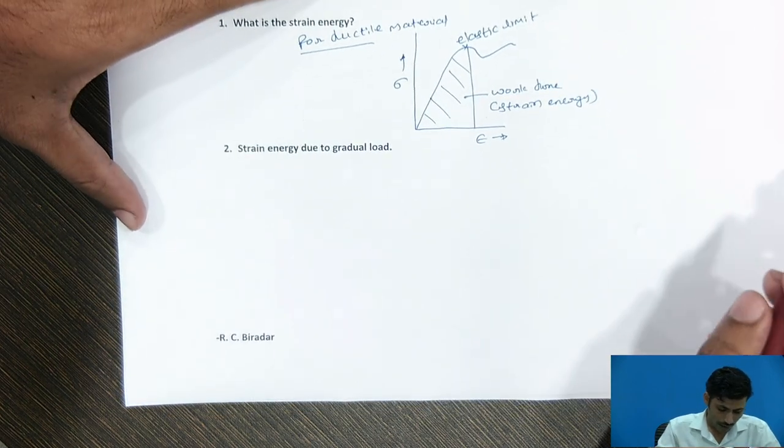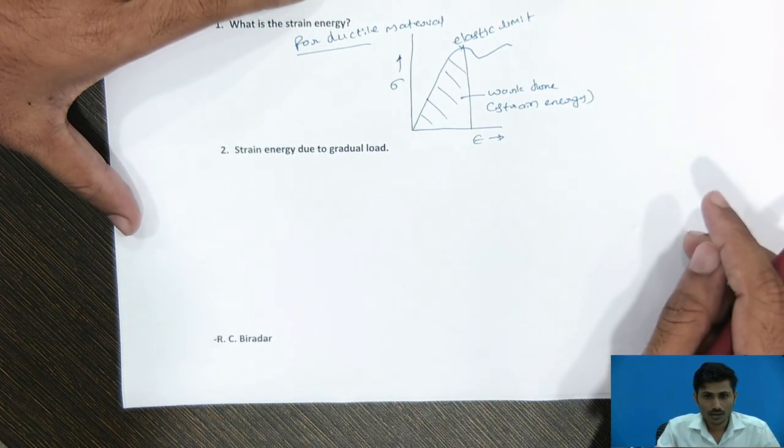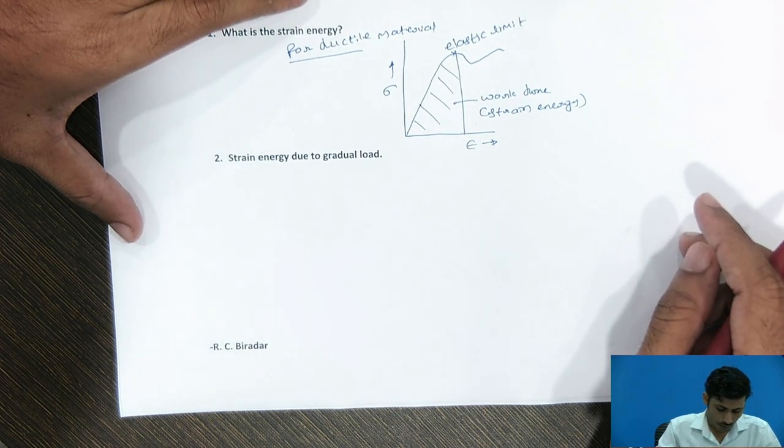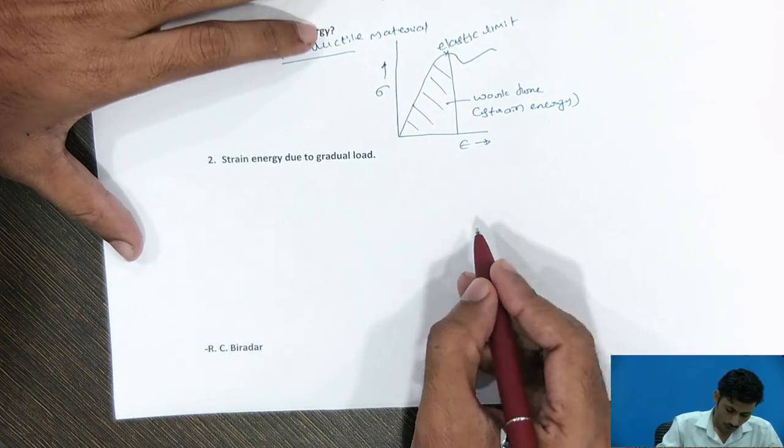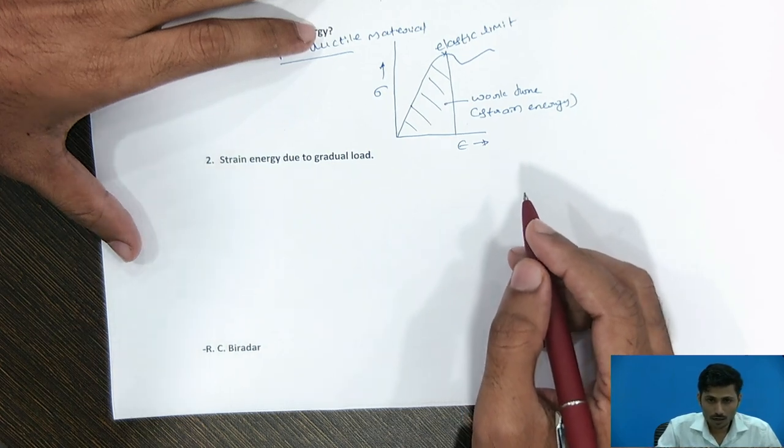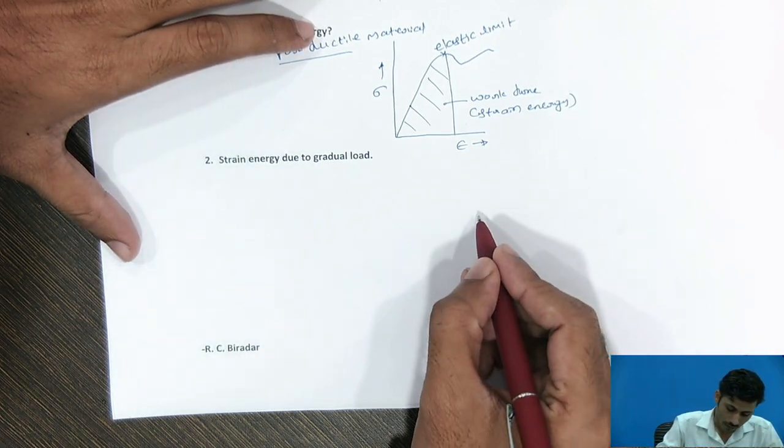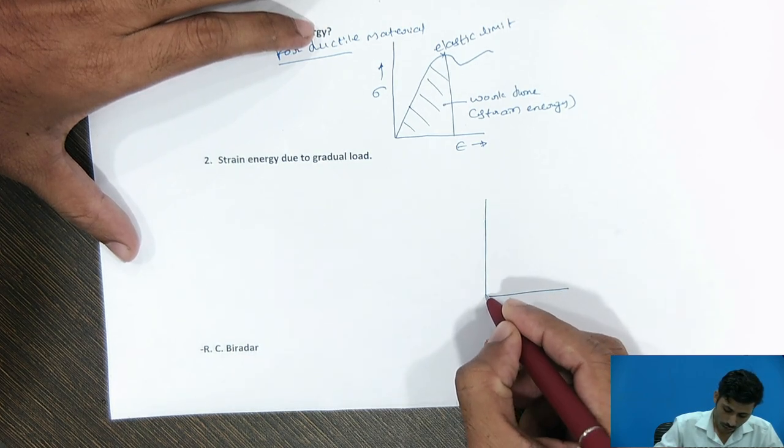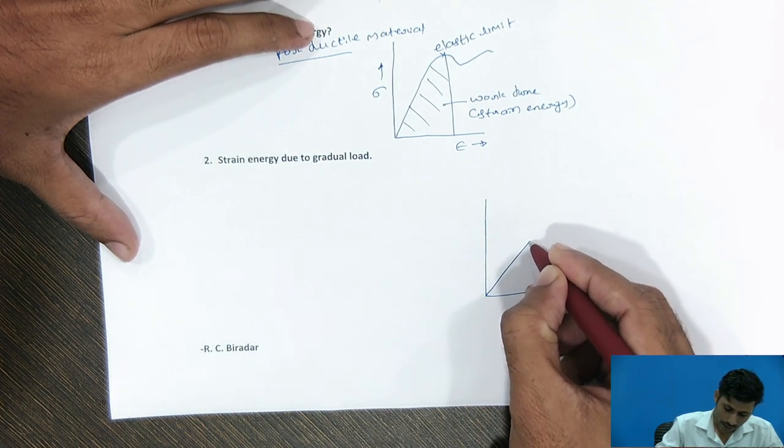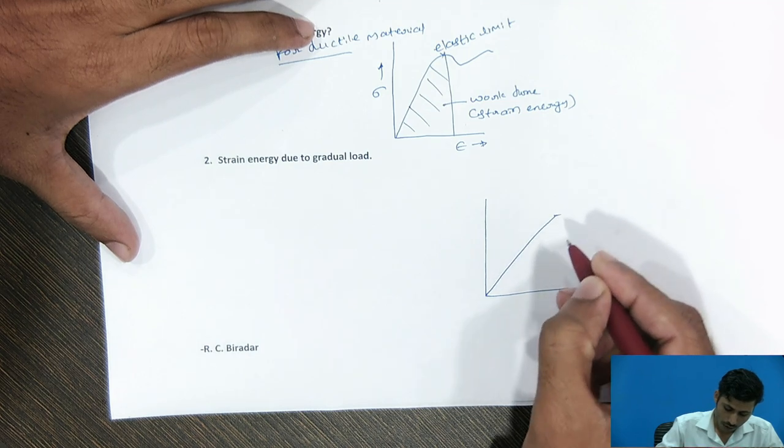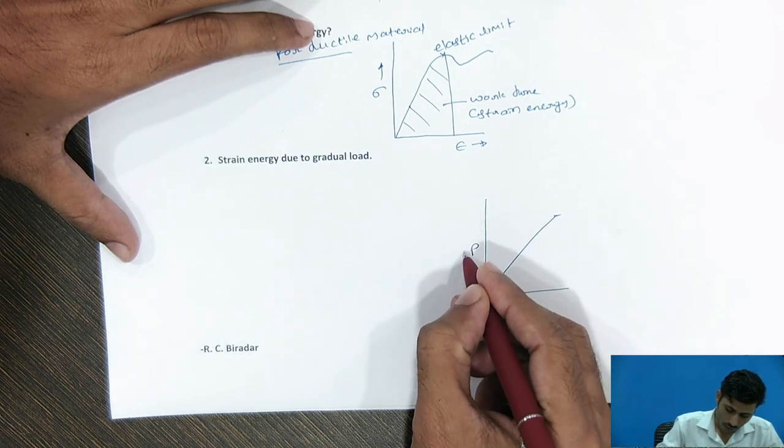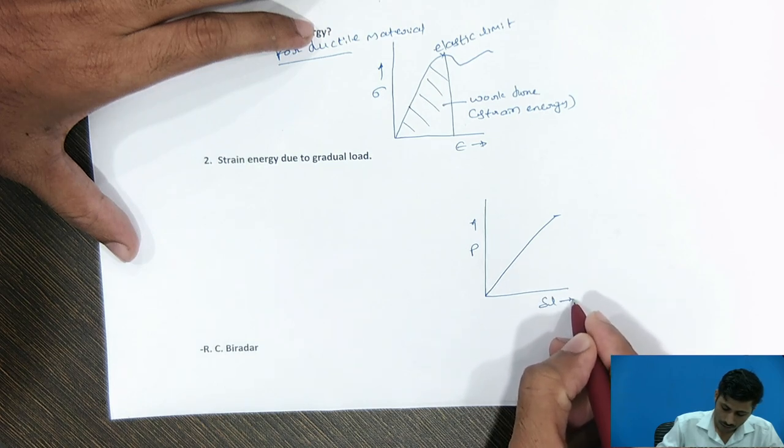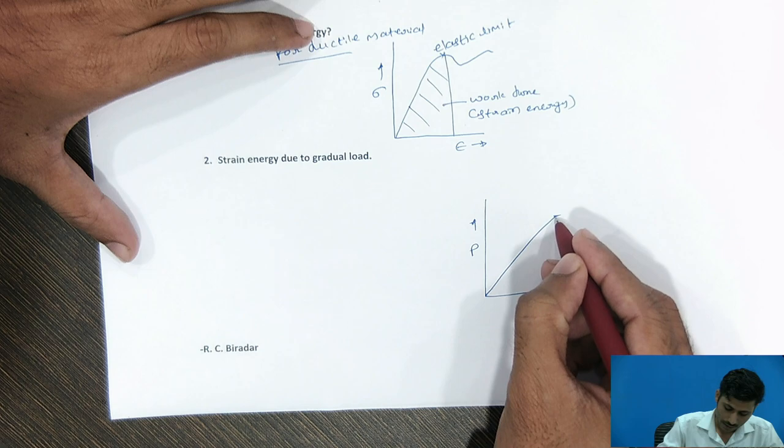Now, we will derive the strain energy formula for gradual type of load applied on a body. So, for the gradual load, the load which is applied on a body in stepwise, it is from starting with zero value of load. And it will increase in time with its full amount. So, that is shown on y-axis. And the change in length is seen on x-axis.